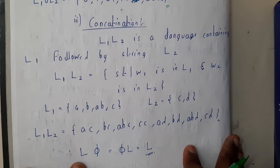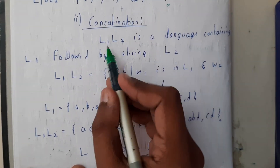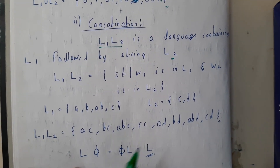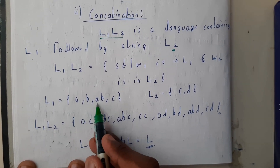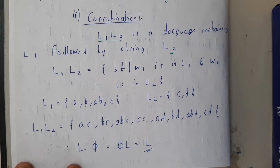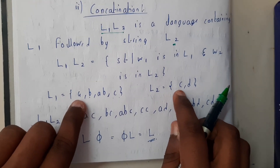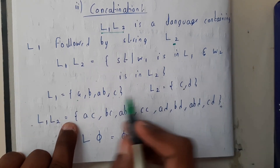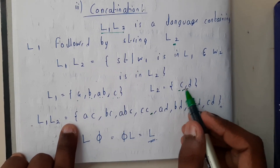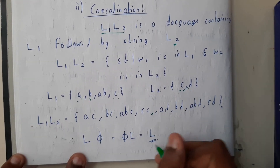We have already discussed concatenation of strings, and it is done similarly for languages. If L1 and L2 are two languages, then L1L2 is the language containing strings of L1 followed by strings of L2. For example, if L1 equals {a, b, ab, c} and L2 equals {c, d}, then concatenating we get: ac, ad, bc, bd, abc, acd, cc, cd.